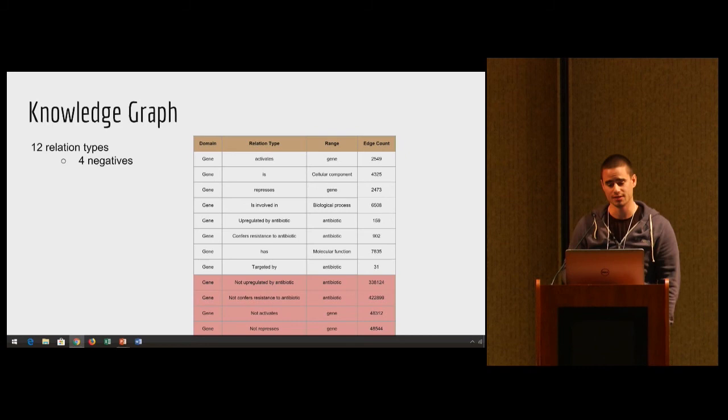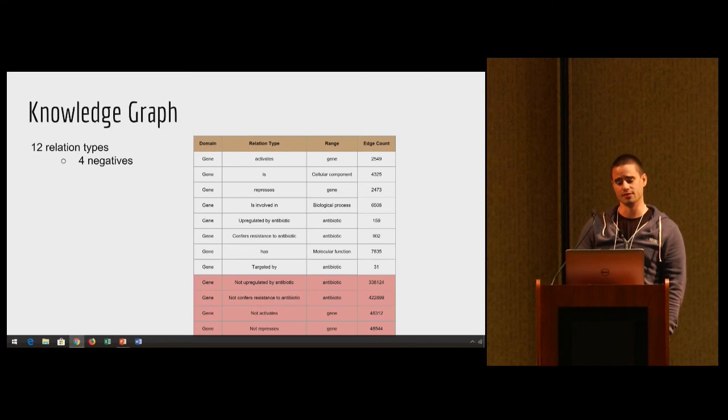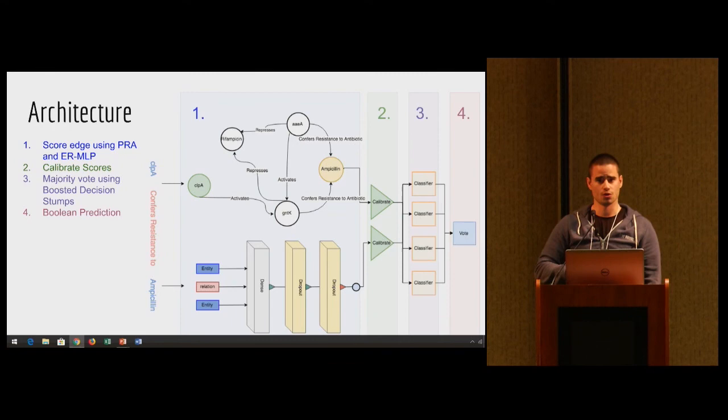The knowledge graph also contains edges or relations between these entities. A gene can activate another gene, a gene is a cellular component, a gene can repress a gene, and a gene can confer resistance to an antibiotic. We have a total of 12 relation types, and four of those are negative versions of four of the positive edge types.